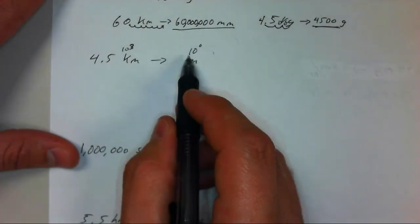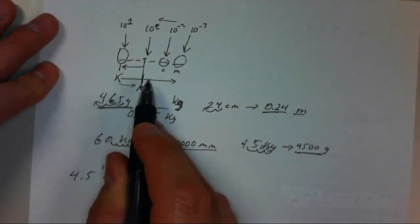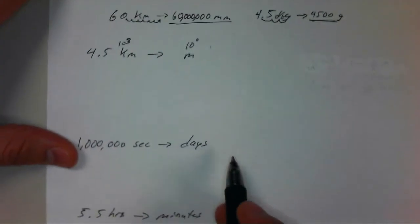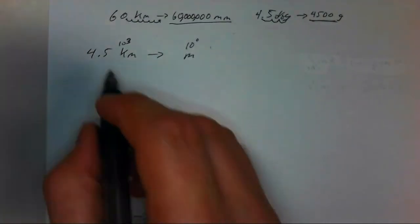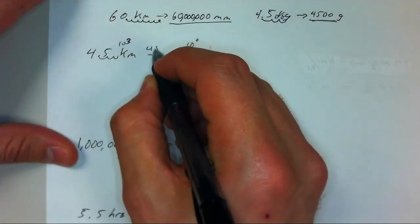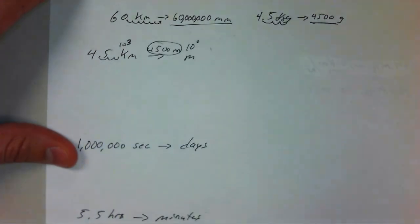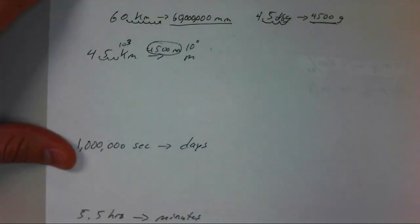So we're going to move three places, and this is going from kilo to meters. So here we are, we're going to be moving to the right. So we'll go three places to the right, 1, 2, 3, and we end up with 4,500 meters.